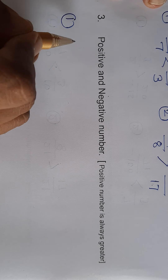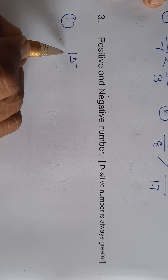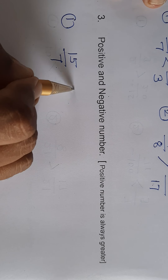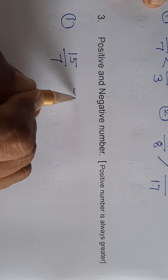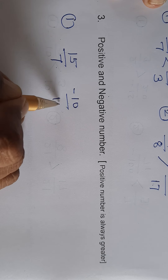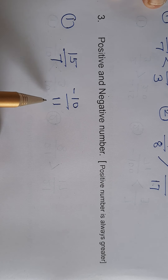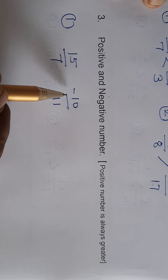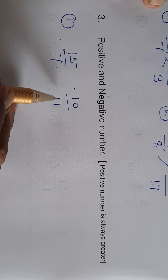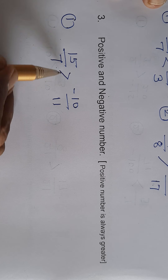For example, 15 upon 7 and negative 10 upon 11. Since negative 10 upon 11 is a negative number, it is the smaller. Therefore, 15 upon 7 is the greater rational number.